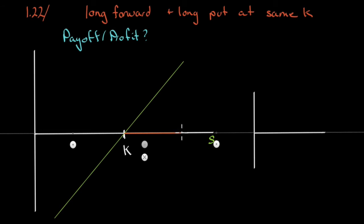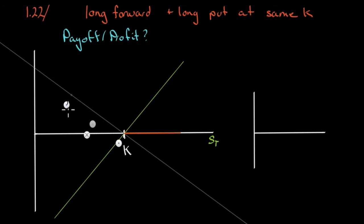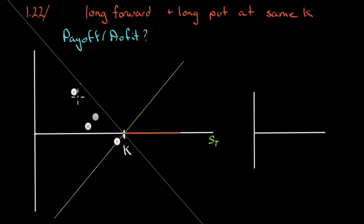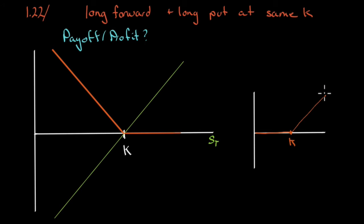Why would we sell something for K when we could sell it for significantly more? The put pays off when the price falls below the strike price K — at a 45-degree angle. So there is our payoff from the two. Notice that as we lose on one we lose on the other, and these two cancel each other out, so up to K our payoff looks flat.